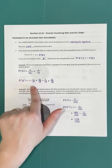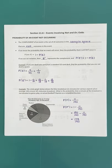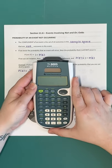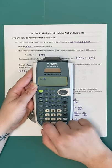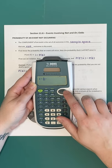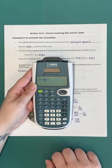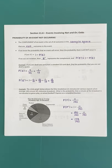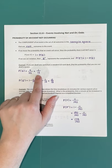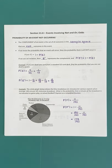The probability of not dealing a queen is 1 minus 1/13. Using the fraction button on the scientific calculator, 1 minus 1/13 gives us 12/13. So if the probability of dealing a queen is 1/13, the probability of not dealing a queen is 12/13 — the probability of dealing anything else in the deck.